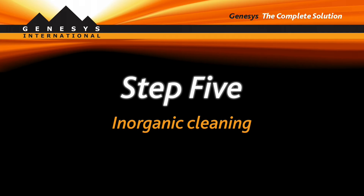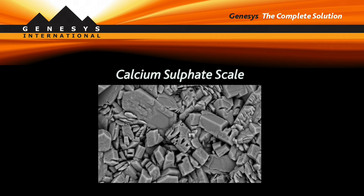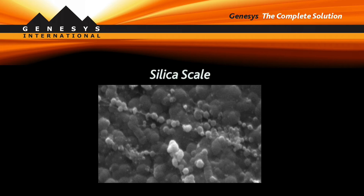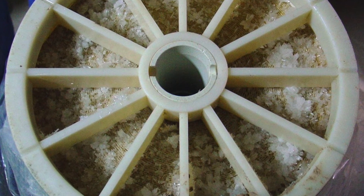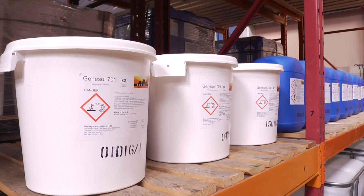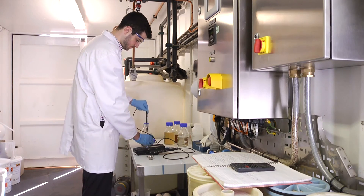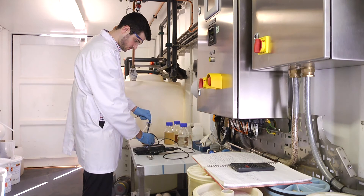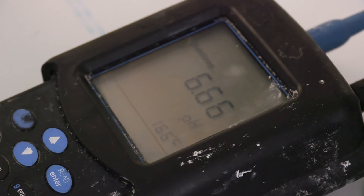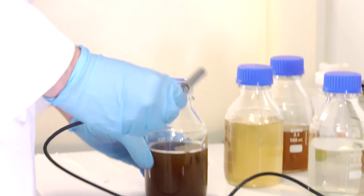Step 5: Inorganic cleaning. Inorganic deposits such as calcium carbonate, calcium sulphate, and silica occur on the final elements of the last stage. Metals can deposit throughout the system. Calcium carbonate and iron can be cleaned with Genesol 701, which is a mild acid cleaner with effervescent microbubbles. The 1% solution should be maintained at 25 degrees centigrade (77 degrees Fahrenheit) and pH should be monitored. Any pH reduction indicates scale removal; discolouration indicates iron removal.